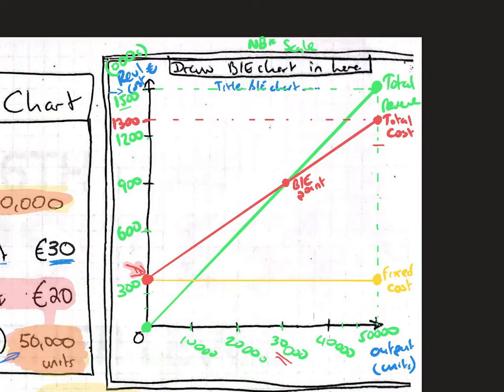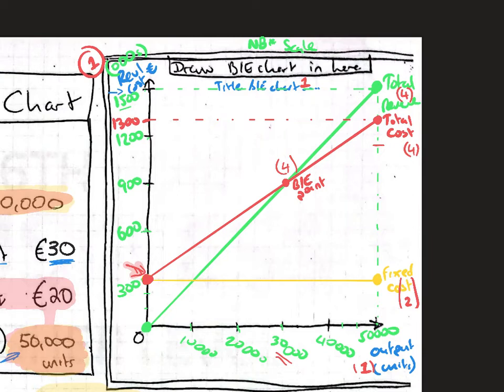In terms of marks: one mark for each labelled axis, two marks for the fixed cost line, four marks for the total cost line, four marks for the total revenue line, four marks for the break-even point, and one mark for the title. So just for drawing those three lines you're already looking at 17 out of 25 marks.